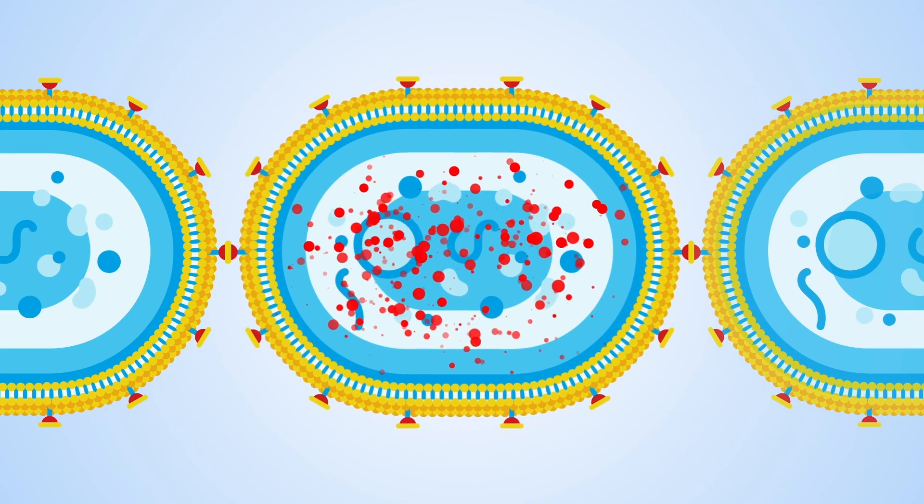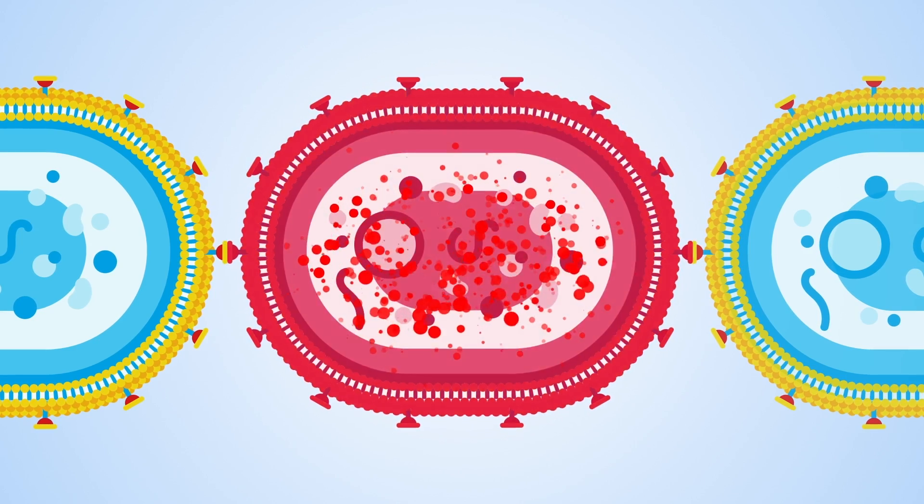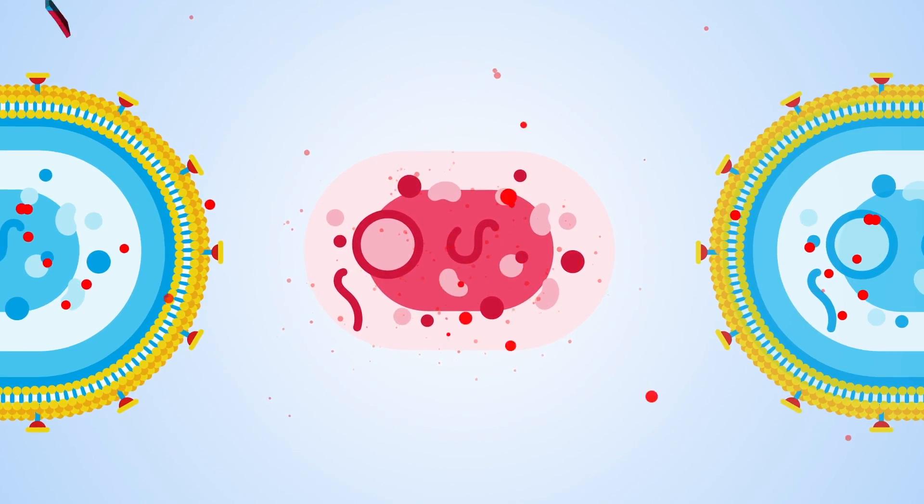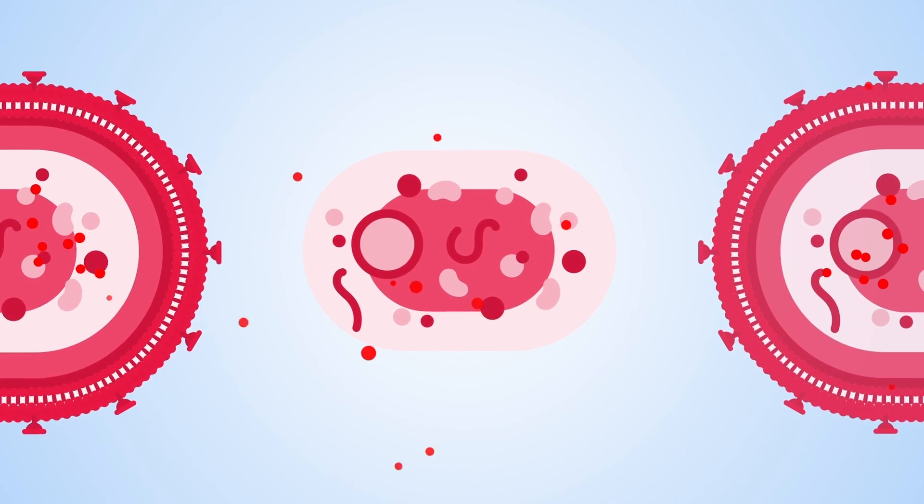This process is not easy to stop, hence why scientists are looking at targeting the essential genes that are required for viral offspring production, to stop it in its tracks.